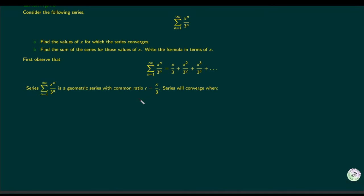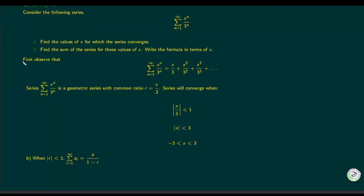Since this is a geometric series, it converges when |r| < 1, meaning |x/3| < 1. Since 3 is positive we can bring it to the other side: |x| < 3, which means x is between −3 and 3. So the series converges for x in the interval (−3, 3).